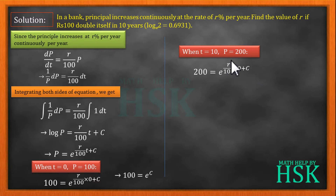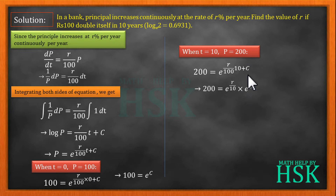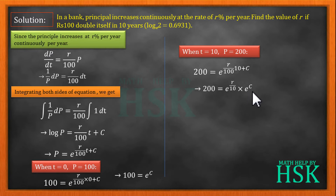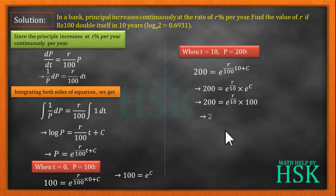Now since we have calculated e^c = 100, we can write 200 = e to the power of (r/10) times e to the power of c, because the exponent is the sum of two values, written as a product. Since e^c = 100, we substitute: 200 = e^(r/10) times 100. Dividing both sides by 100, we get 2 = e to the power of r/10.